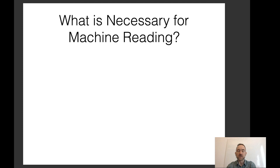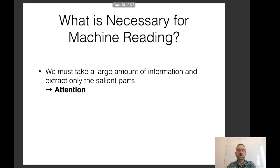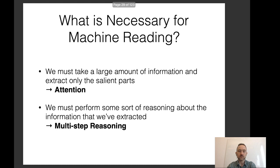These are some examples of machine reading tasks. If we think about what is necessary for machine reading, we must take large amounts of information and extract only the salient parts of it. We want to pare down the passage to only what's useful for answering. Attention is a good way of doing this, because attention is about finding the information you should be paying most attention to. Another thing is we must perform some sort of reasoning about the extracted information — individual pieces may need to be combined to make final inferences. There is a lot of focus on multi-step reasoning.